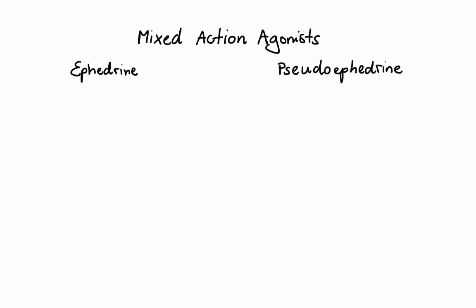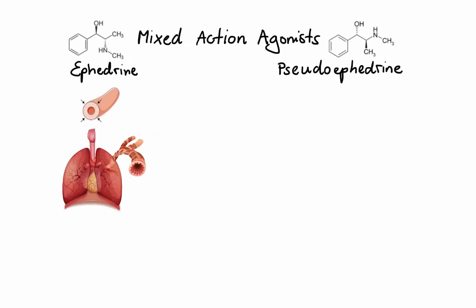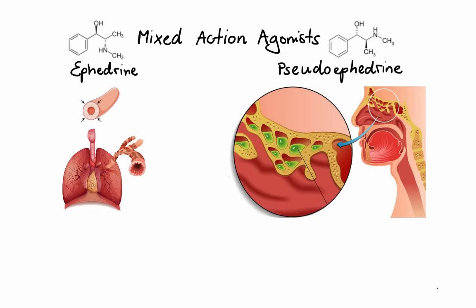Lastly, let's briefly discuss mixed-action adrenergic agonists. Examples of drugs in this group are ephedrine and pseudoephedrine, which cause activation of adrenergic receptors by both direct binding as well as release of stored norepinephrine from presynaptic terminals. Ephedrine and pseudoephedrine have a long duration of action because they are not catecholamines and thus are poor substrates for COMT and MAO enzymes. Primary effects of ephedrine are vasoconstriction and bronchodilation; however, due to its side effects and availability of better drugs, ephedrine is rarely used in clinical practice. Pseudoephedrine also causes vasoconstriction and relaxation of bronchial smooth muscle, but mainly activates receptors located in the nasal passages. The constriction of blood vessels allows less fluid to leave, resulting in decreased inflammation of nasal passages and decreased mucus production, which is why pseudoephedrine is commonly used as a decongestant.